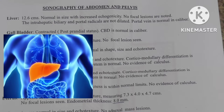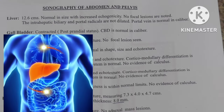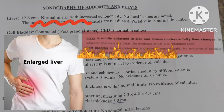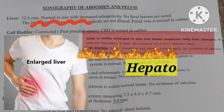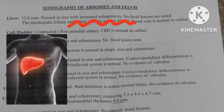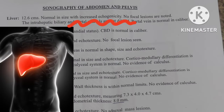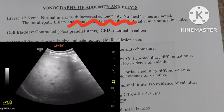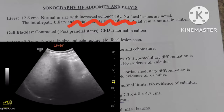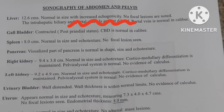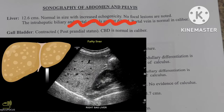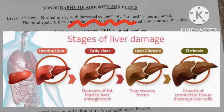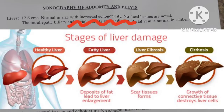The liver is an organ present on the right side of the abdomen. If it is normal, they mention it as normal in size. If the size is increased, they call it hepatomegaly. Regarding ecotexture — which is the tissue pattern — if normal, they say normal. If there is increased or coarse echogenicity, there are chances of liver problems like fatty liver, liver fibrosis, or liver cirrhosis.